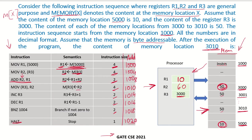Next, whatever is in R2 should be stored at the memory address contained in R3. R3 holds address 3000, so the value 60 is written to M[3000]. Now M[3000] = 60. Then R3 is incremented by 1, so R3 becomes 3001. The next instruction decrements R1, so R1 becomes 9.